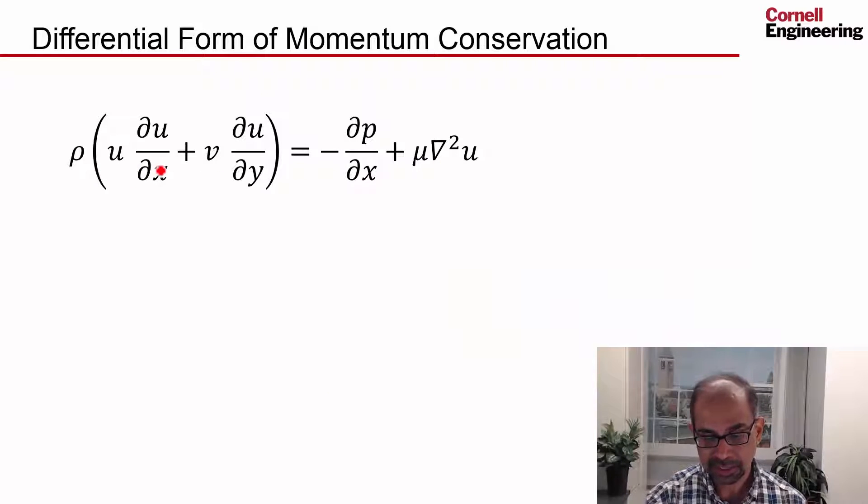So in the x-direction, this is the final form of momentum conservation. These two terms represent the force in the x-direction, and this is all written per unit volume, and this is for an infinitesimal fluid particle. Don't forget that this is all written for an infinitesimal fluid particle.